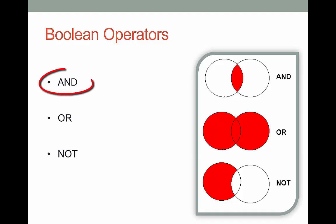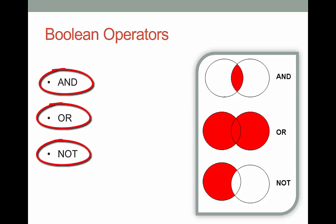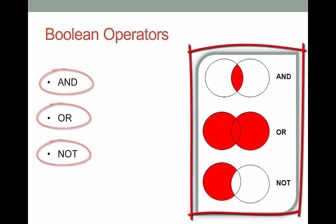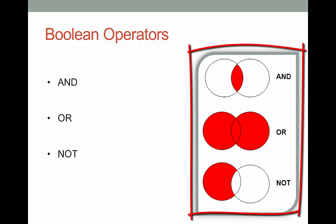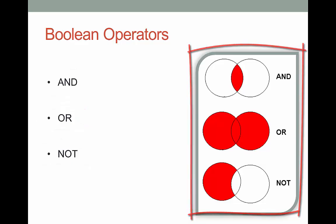There are three: AND, OR, and NOT. They're usually associated with an image like this one. If you've ever learned about Boolean before, you've probably seen something similar. It's called a Venn diagram, and it's just a visual way of showing you how these terms can narrow, expand, or limit your search so you find just what you need, not one million hits.